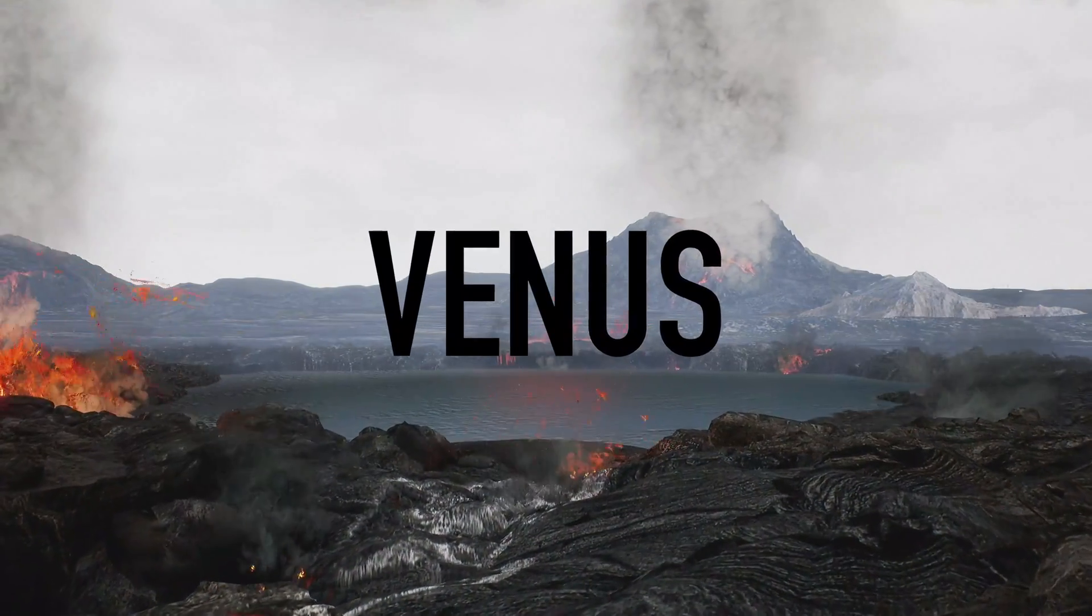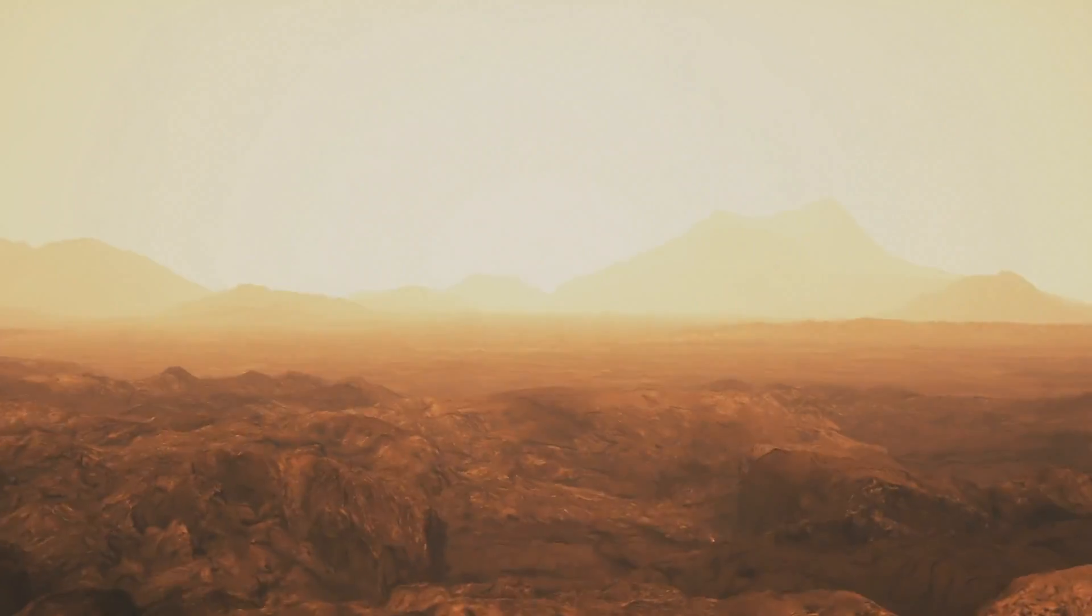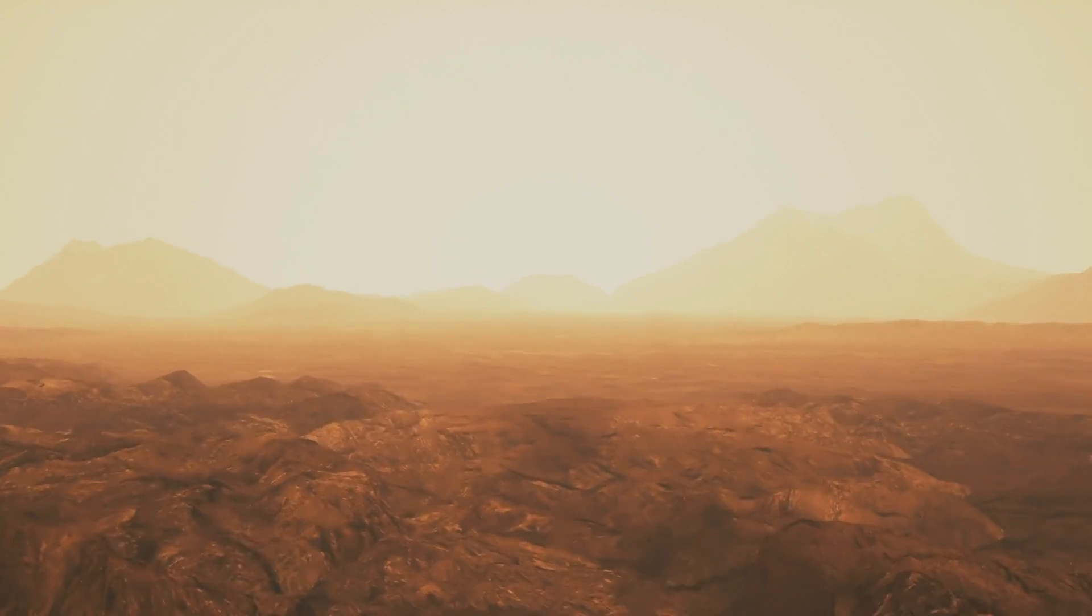How does planetary habitability evolve over time? Our mysterious sister planet Venus may have once had oceans of water, yet the Venus of today presents a different face with an incomparably hot and inhospitable environment.